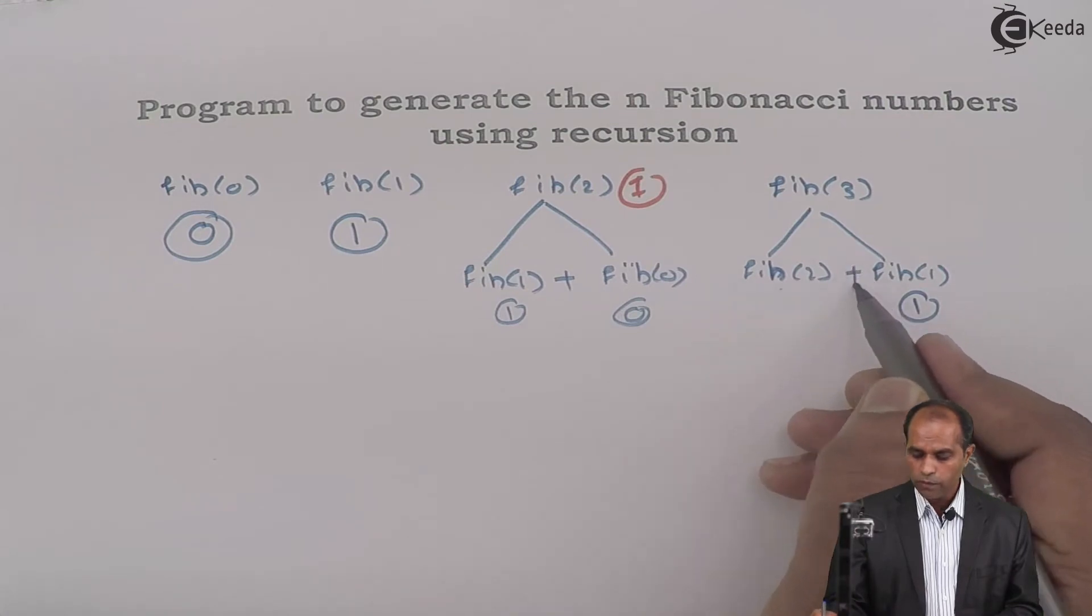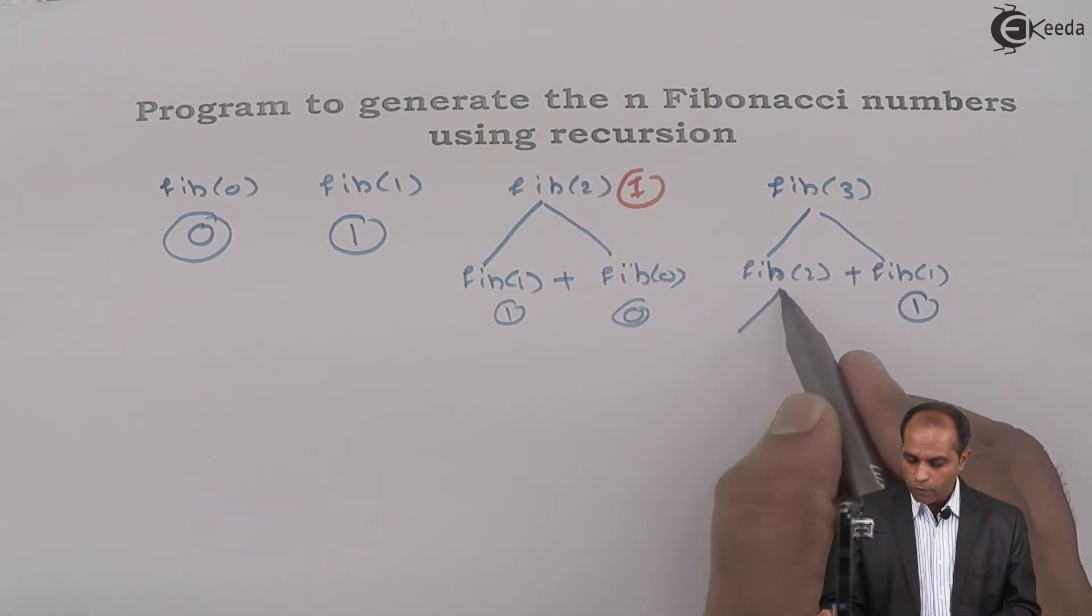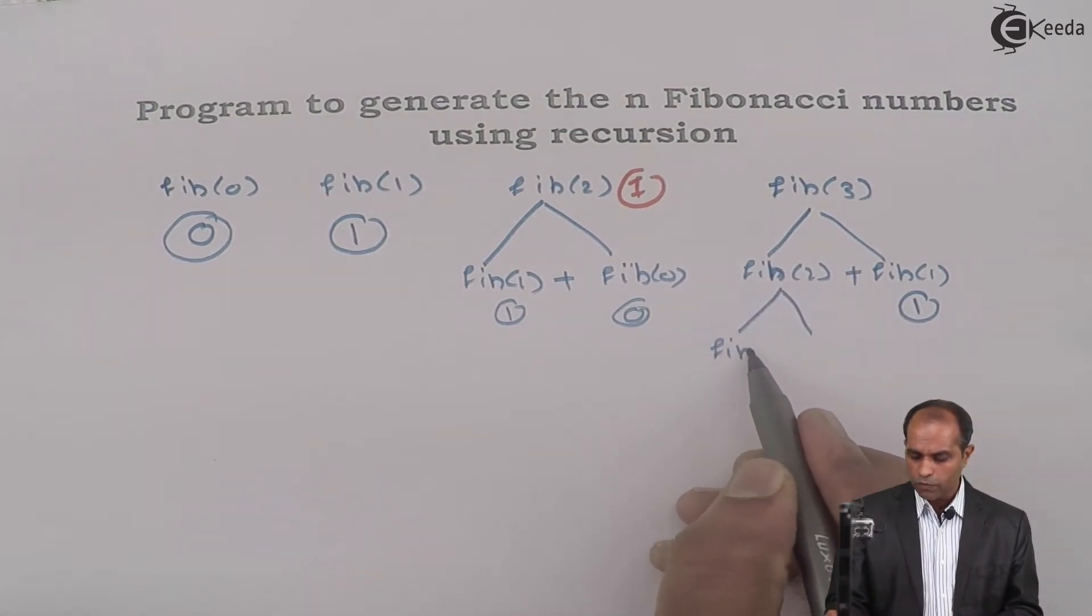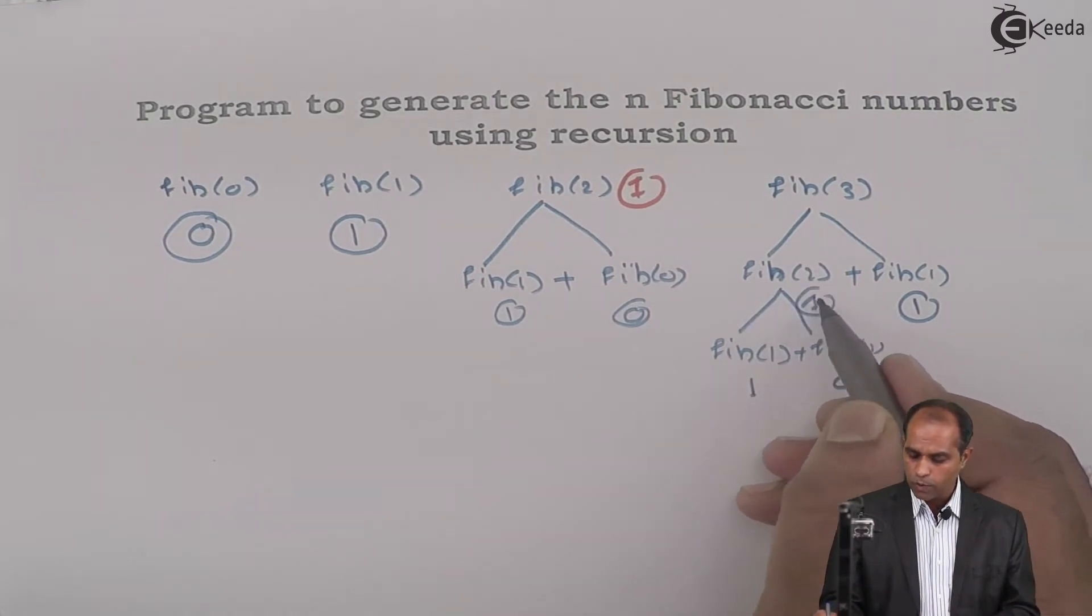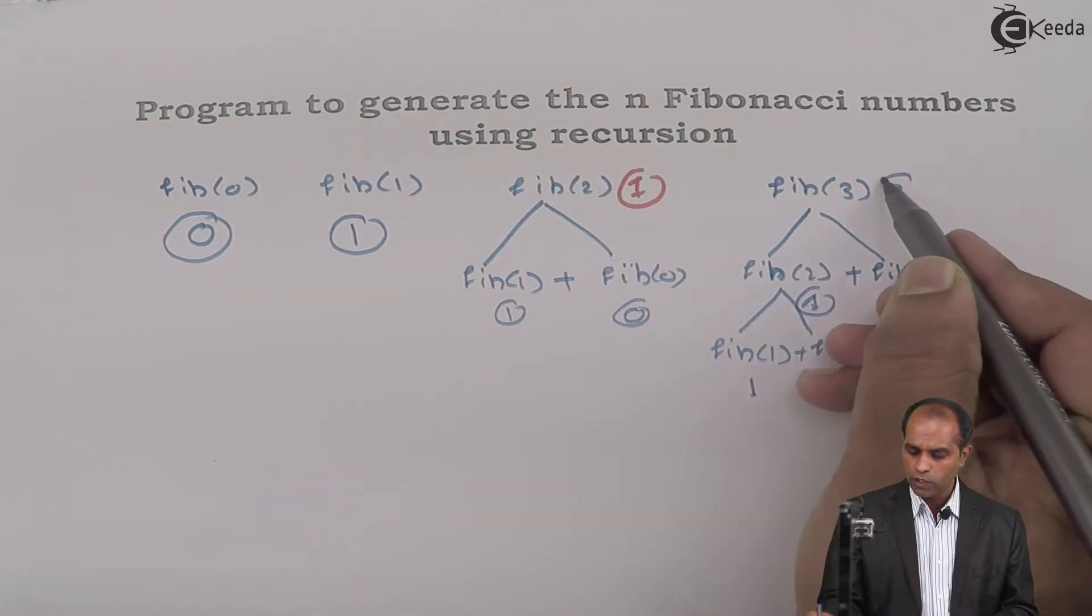Fib of 2 is unknown. So if Fib of 2 is unknown, what will you say? You will say Fib of 1, Fib of 1, Fib of 0. So Fib of 1 is 1, Fib of 0 is 0. 1 plus 0 is 1. So that 1 goes to this place. 1 plus 1 is 2 in this particular example.